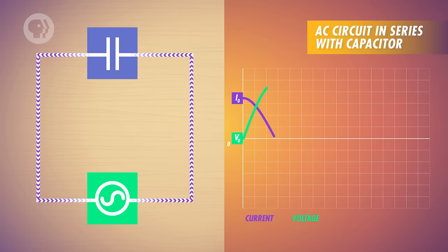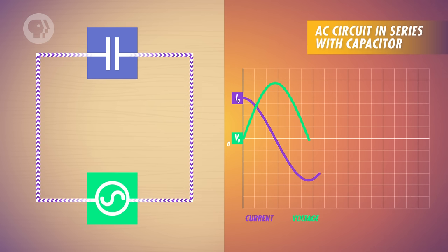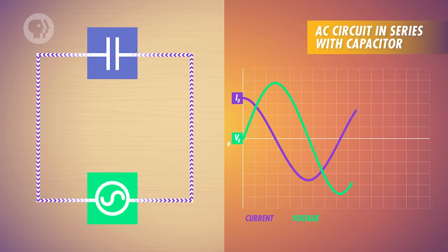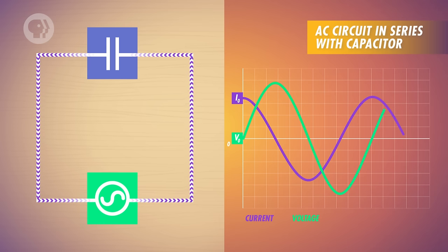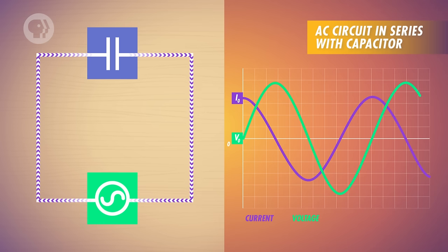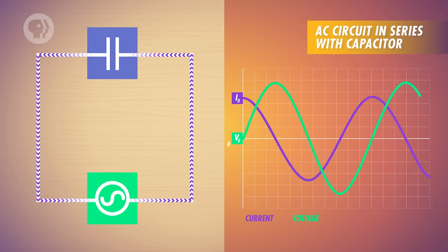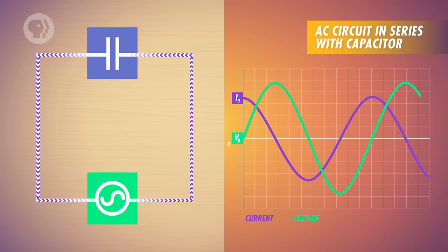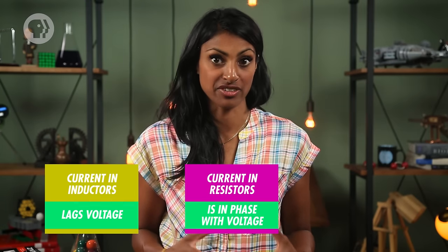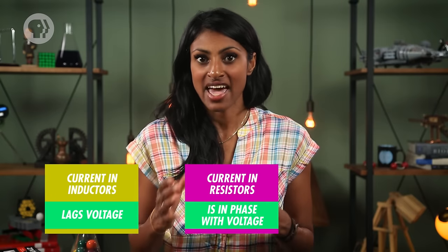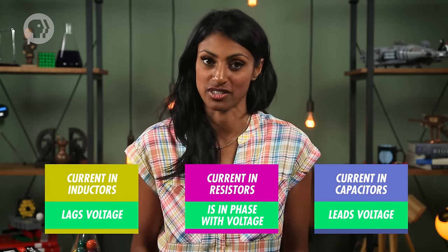Capacitors in AC circuits are also out of phase, but for a different reason. When the current flows in one direction, charge momentarily builds up on one of the plates, so when the voltage changes from positive to negative, the capacitor acts as a smaller voltage source that still pushes the current along. In this case, current leads voltage by 90 degrees, changing direction ahead of the voltage source. To sum up: current in inductors lags voltage, current in resistors is in phase with voltage, and current in capacitors leads voltage.